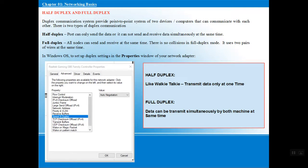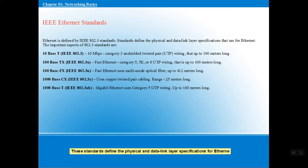Next we have duplex modes — half duplex and full duplex. A duplex communication system provides point-to-point communication from one device to another. In half duplex, only one signal can be transmitted at a time — like a walkie-talkie, where the sender transmits and the receiver cannot send at the same time. This is a disadvantage. In full duplex, all nodes can send and receive messages at the same time — data is transmitted simultaneously by both machines. We can check duplex mode in our network properties under the Advanced tab.